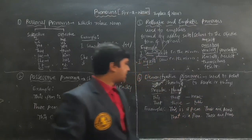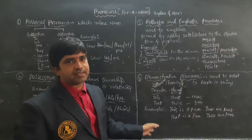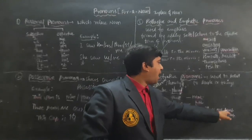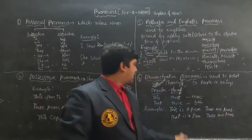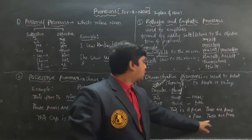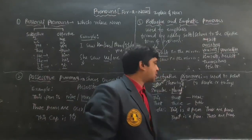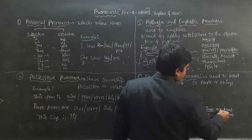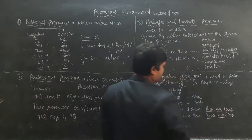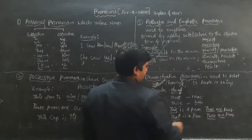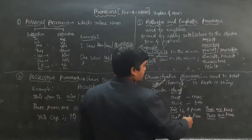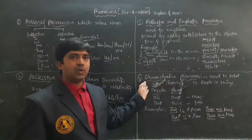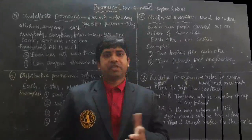See the examples: 'This is a pen' — 'These are pens.' 'That is a pen' — 'Those are pens.' In the plural form we use the verb according to plural, and for singular we use the verb according to singular. This is about Demonstrative Pronouns.